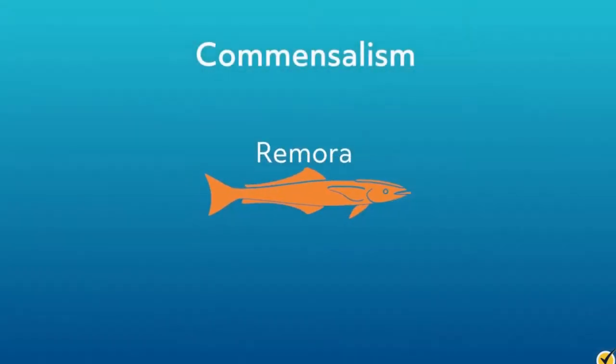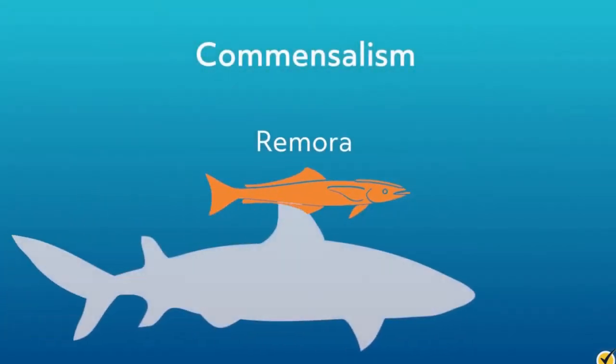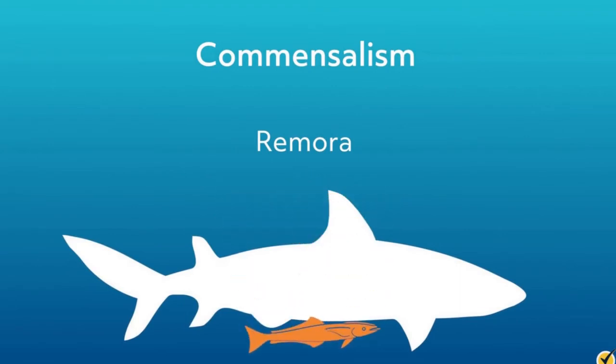Another example of commensalism is one organism using another as a means of transportation. A lot of insects, fish, and other animals use each other in this way, but a good example is the remora — a type of sucker fish that attaches itself to sharks and other big fish to catch an underwater ride. This in and of itself is an example of commensalism since only the remora really benefits, but this relationship can change to mutualism when the remora feed on the parasites on the backs of these big fish.